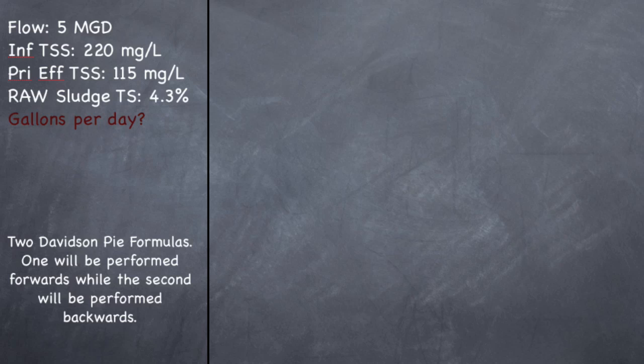So let's do the second pi formula. And now we get to use this number. So 4.3% equals 10,000 mg per liter. So the raw sludge total solids concentration is 4.3%. So if 1% is 10,000, how much is 4.3%? So 4.3% times 10,000 mg per liter per 1% equals 43,000 mg per liter. So the sludge at the bottom of my clarifier is averaging 43,000 mg per liter.